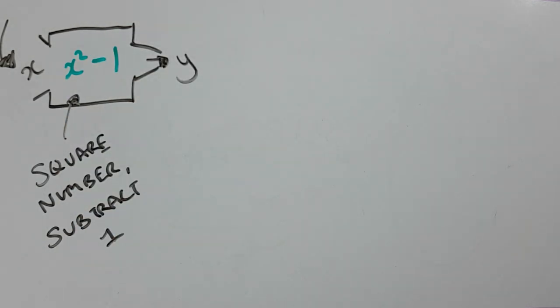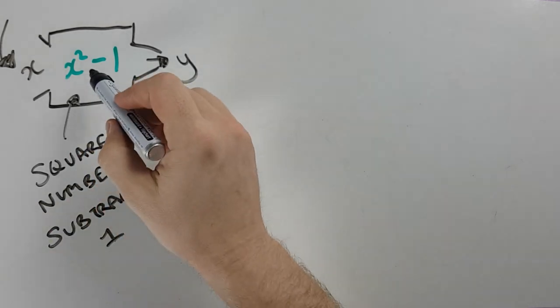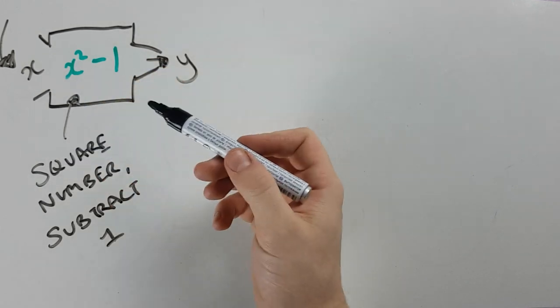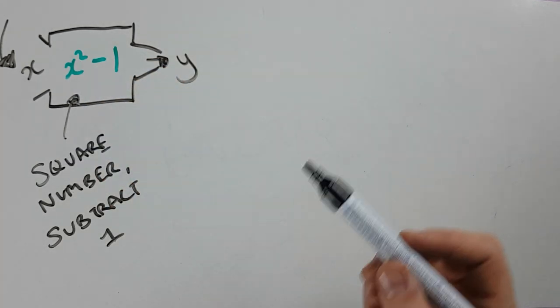Now, last time I gave us the numbers going in, it was 2, 3, 4. This time, I'm just going to say, what happens if we wanted to know what it would be if I put in 10? So I'd say 10 squared, and then minus 1. What would that be? Cool.